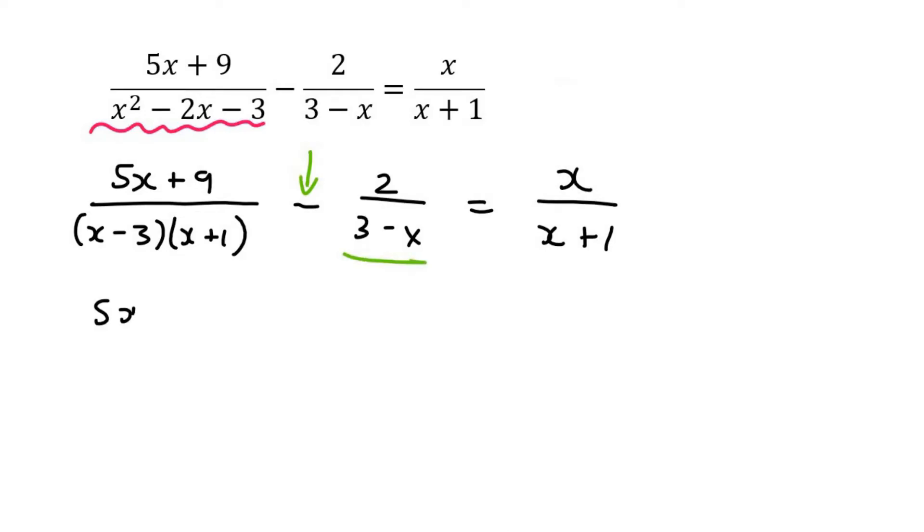So on the next line, it's going to go 5x plus 9 over x minus 3, x plus 1, plus 2 over x minus 3. See what I did there? Equals to x over x plus 1.